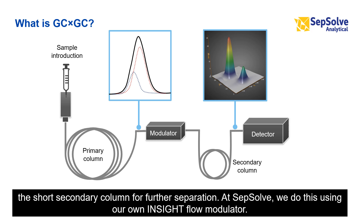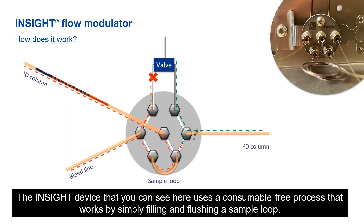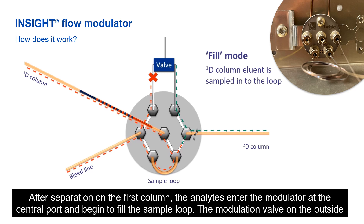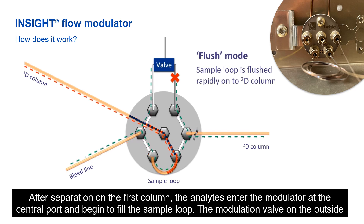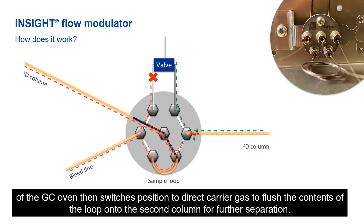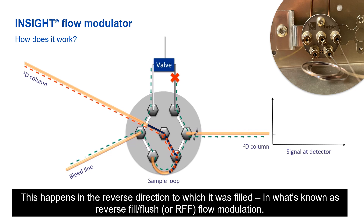At SipSolv, we do this using our own InSight Flow Modulator. The InSight device that you can see here uses a consumable-free process that works by simply filling and flushing a sample loop. After separation on the first column, the analytes enter the modulator at the central port and begin to fill the sample loop. The modulation valve on the outside of the GC oven then switches position to direct carrier gas to flush the contents of the loop onto the second column for further separation. This happens in the reverse direction to which it was filled, in what's known as reverse fill flush, or RFF flow modulation.